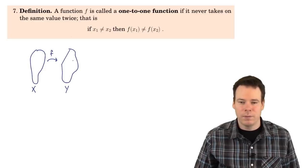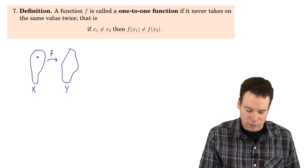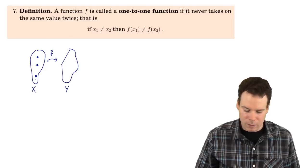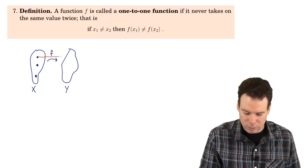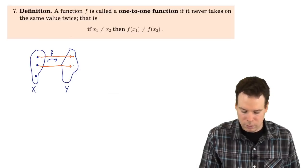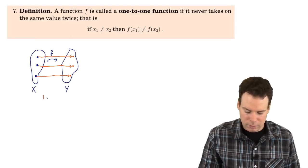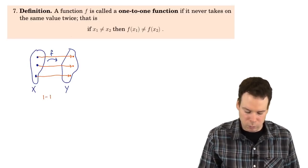It's one-to-one if it doesn't take the same value twice. What that means is: suppose I start with some inputs — those all have to go to different outputs. This is an example of a one-to-one function, which we typically write as 1-1.